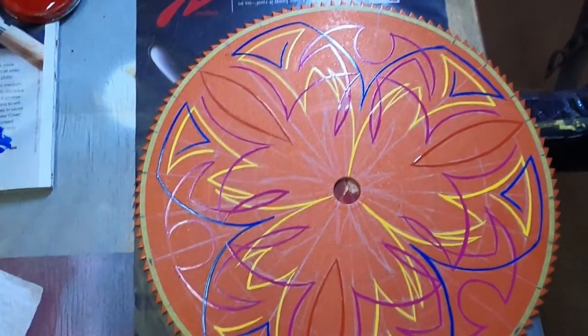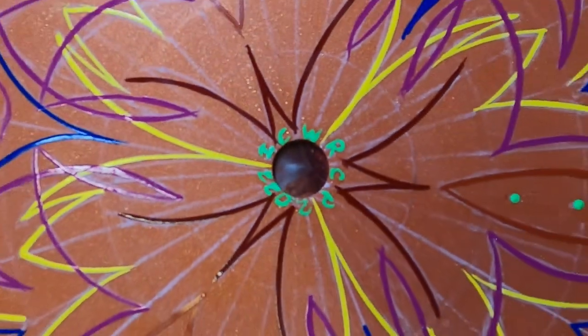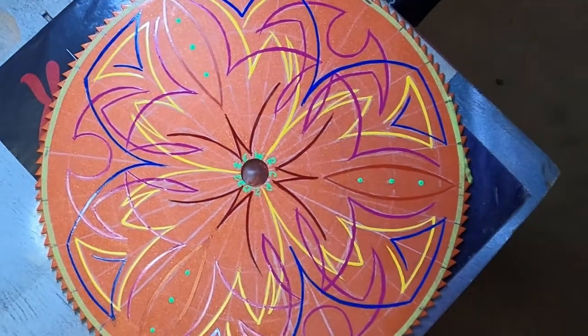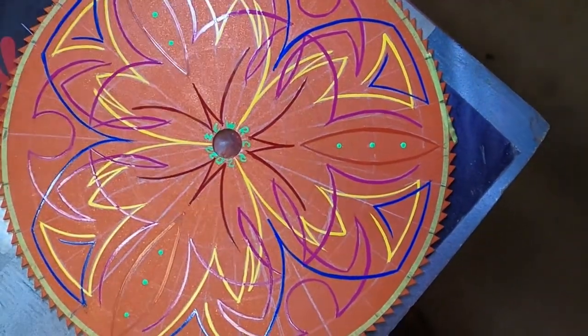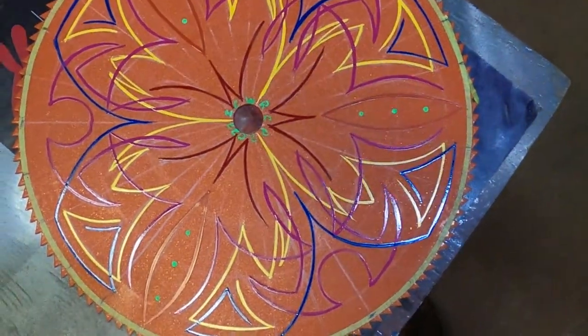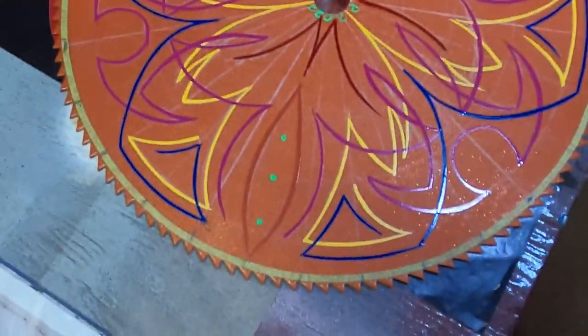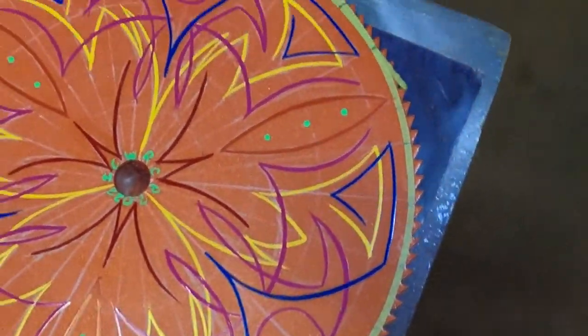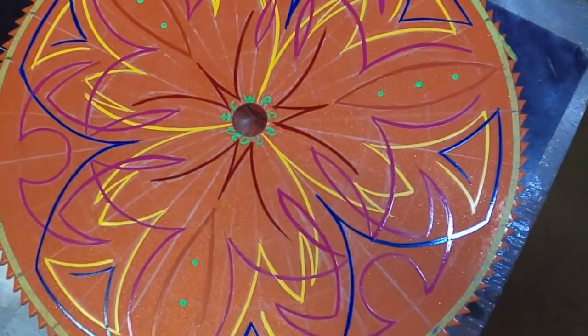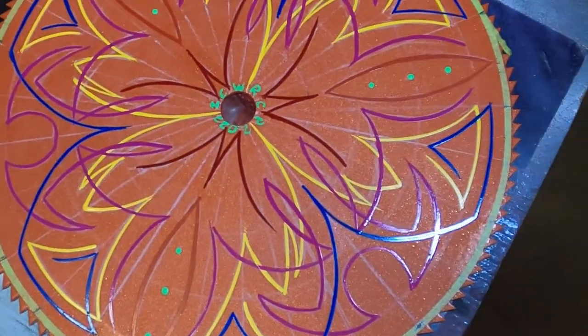There it is, all finished up. Nice little kaleidoscope. I'll change this light here. Looks good. Got to do some little touch-ups to make it better, and get it in clear. This project's done.